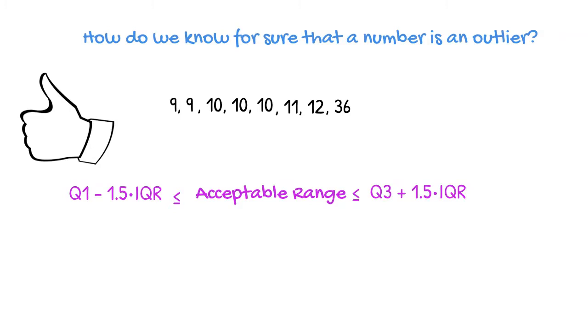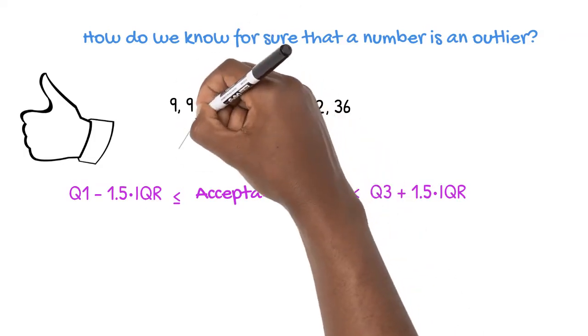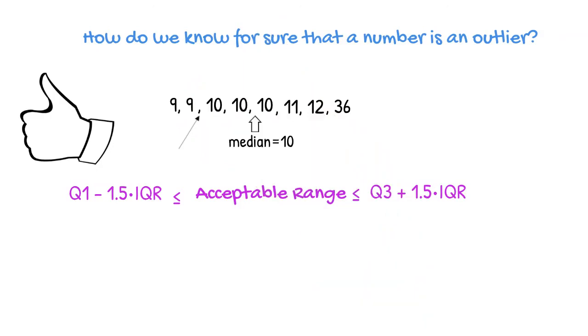Let's find our quartiles and interquartile range. To find the quartiles, we first need to locate the middle of our data after making sure our numbers are arranged in order. The lower quartile is the median of the lower half of the values, the average of 9 and 10. Q1, the lower quartile, is equal to 9.5.